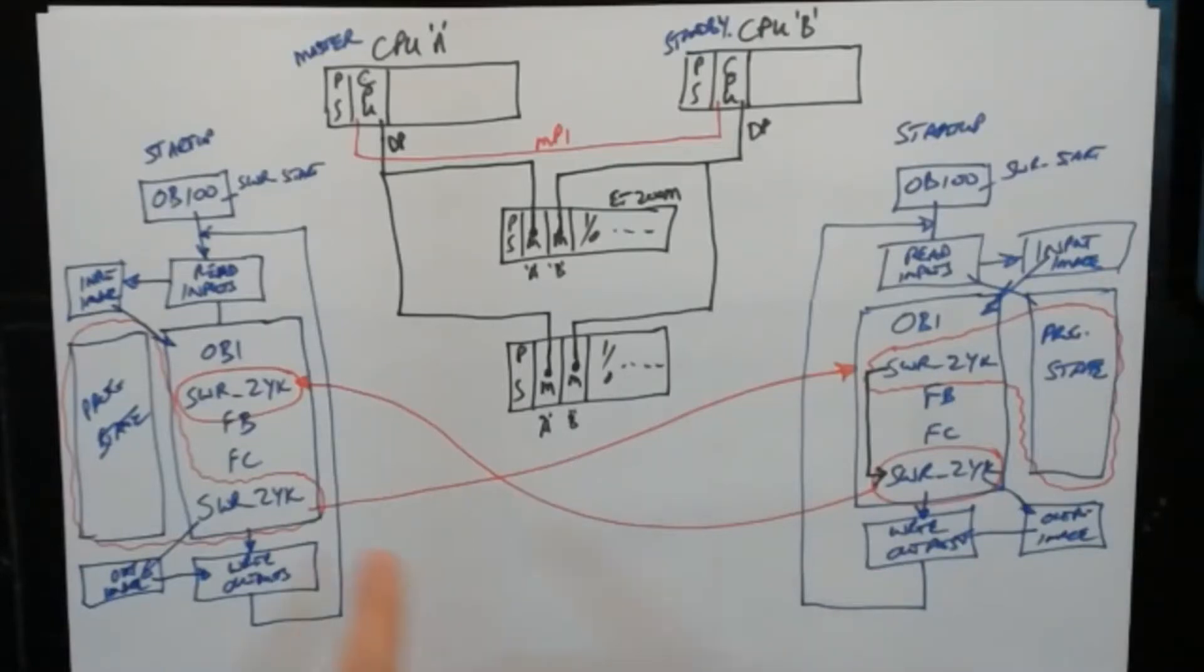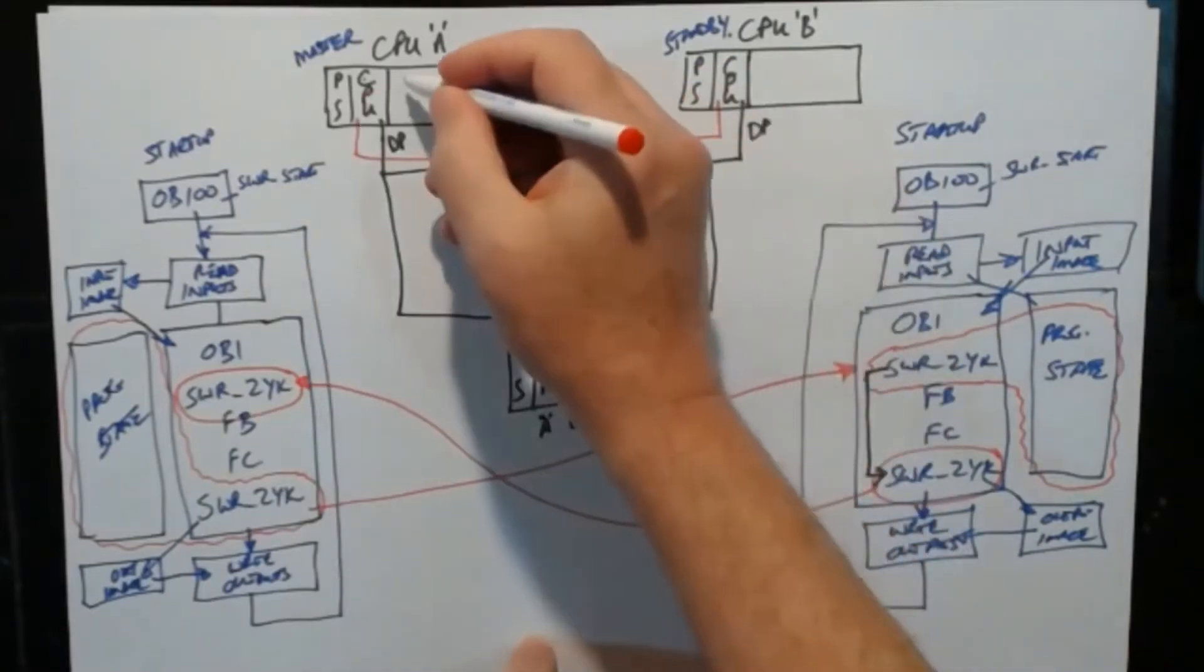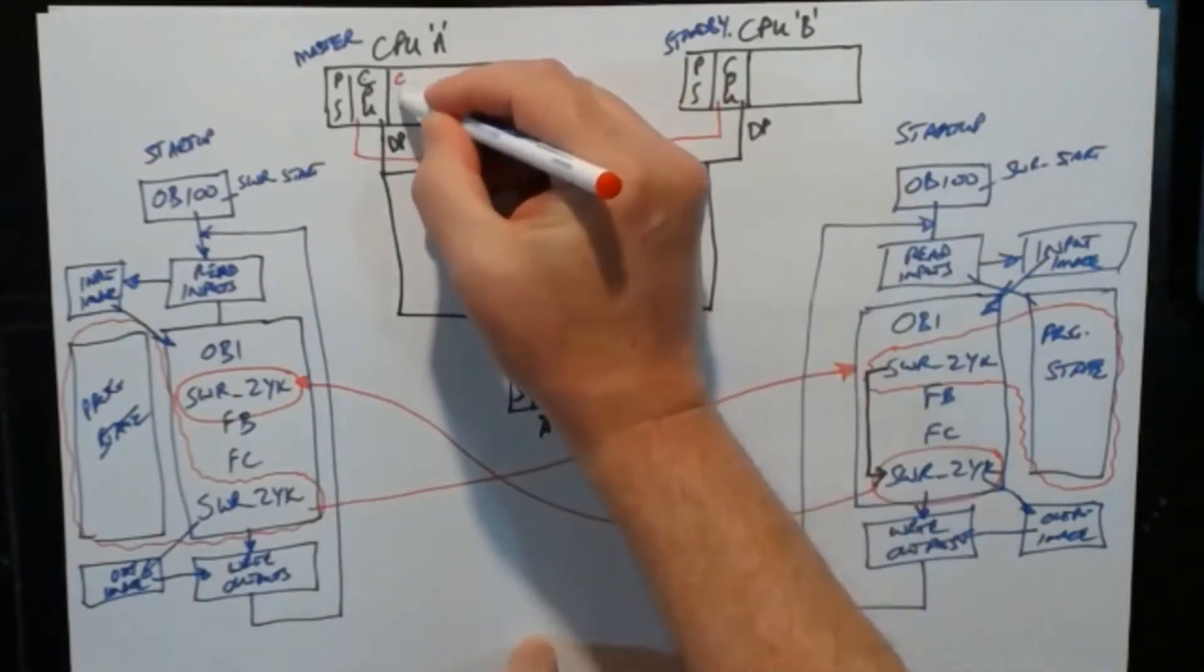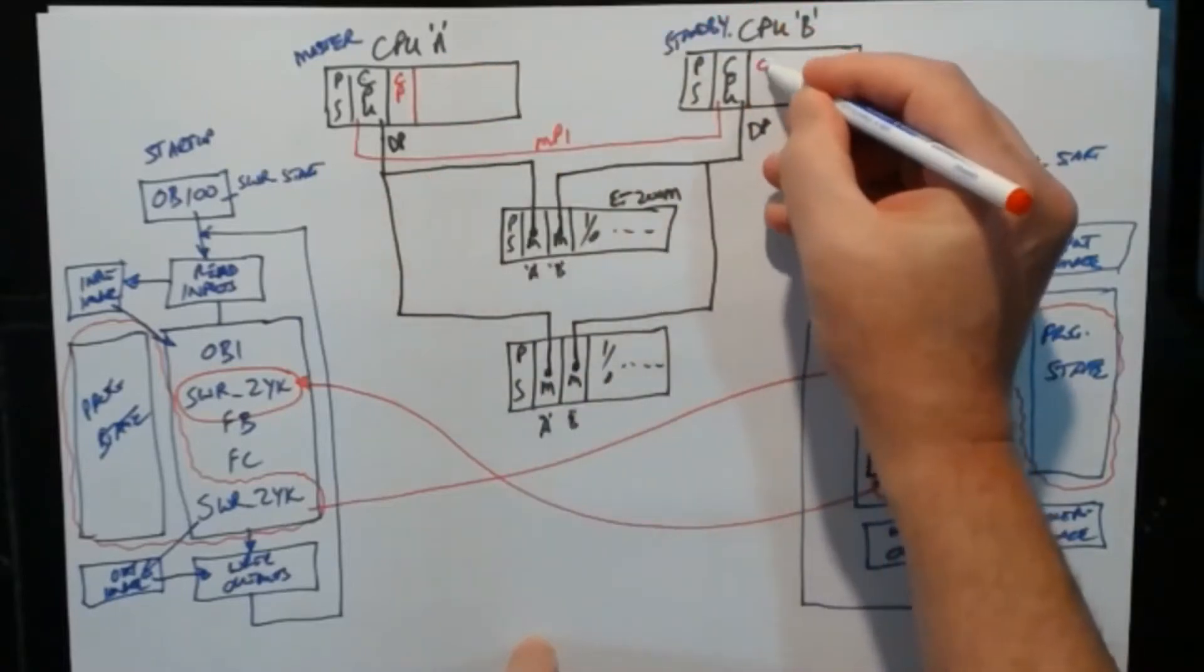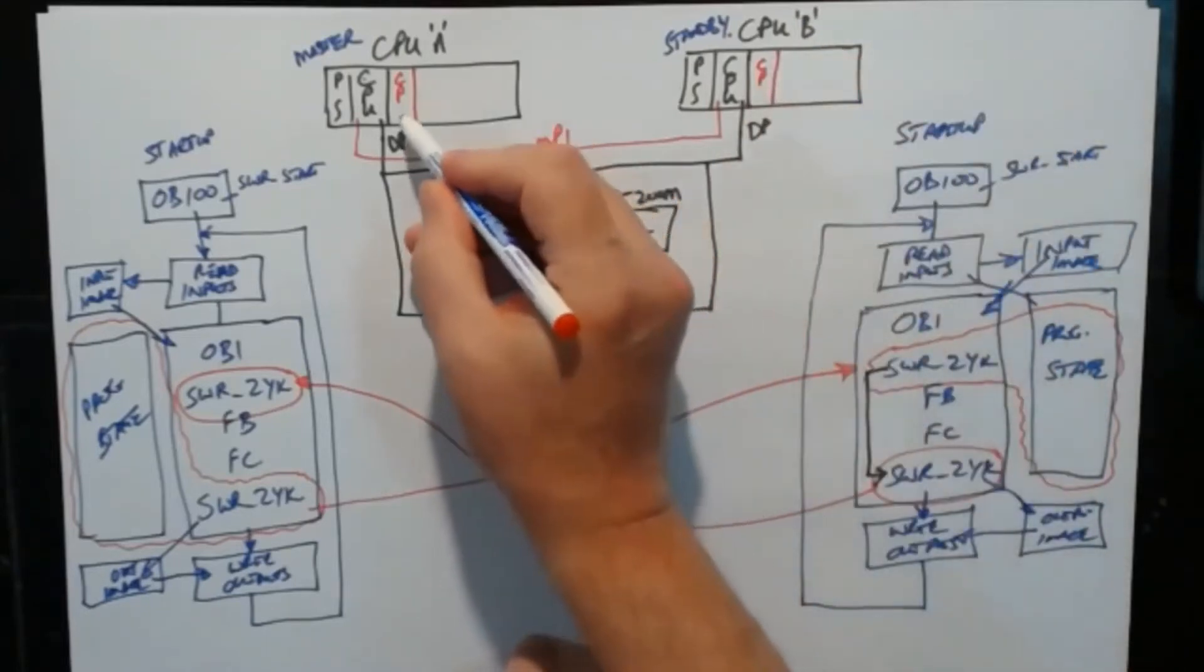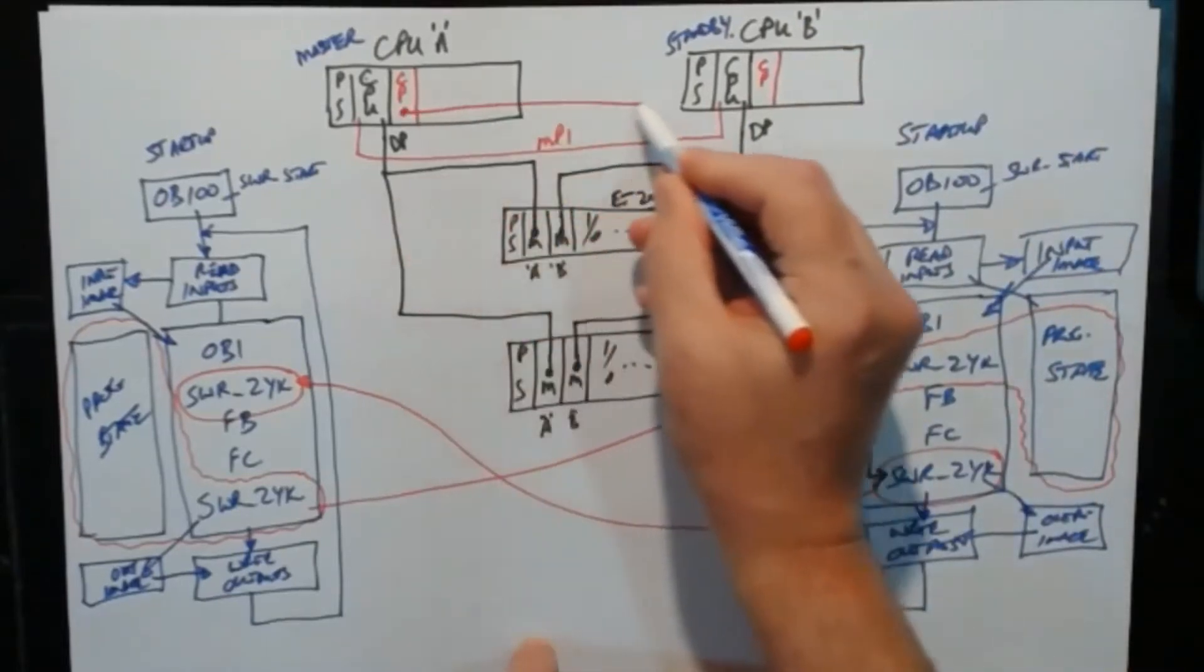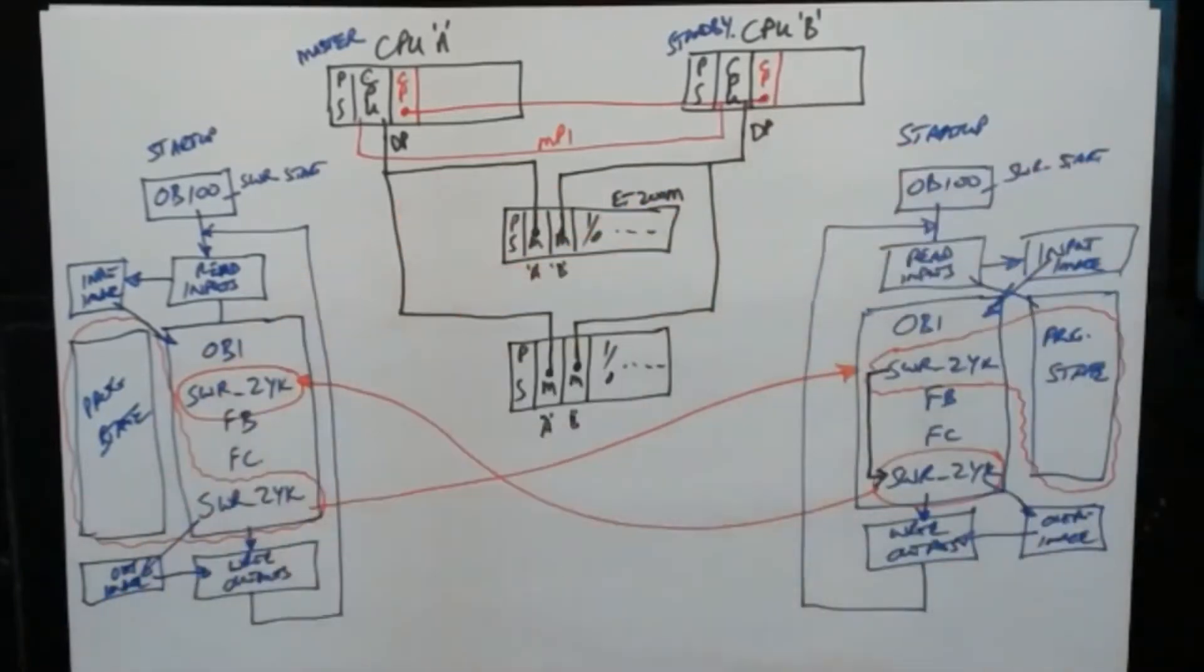We can speed up this data transfer slightly by removing the MPI link and replacing it with a CP module on both PLCs. If these two CPUs are close enough together, we can push up all the way up to 12 megabits per second.